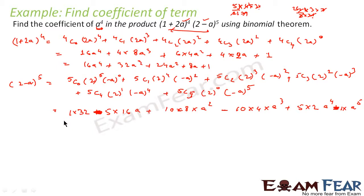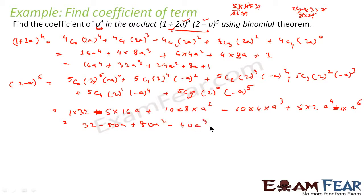So what we get for (2−a)⁵ is: 32 − 80a + 80a² − 40a³ + 10a⁴ − a⁵.